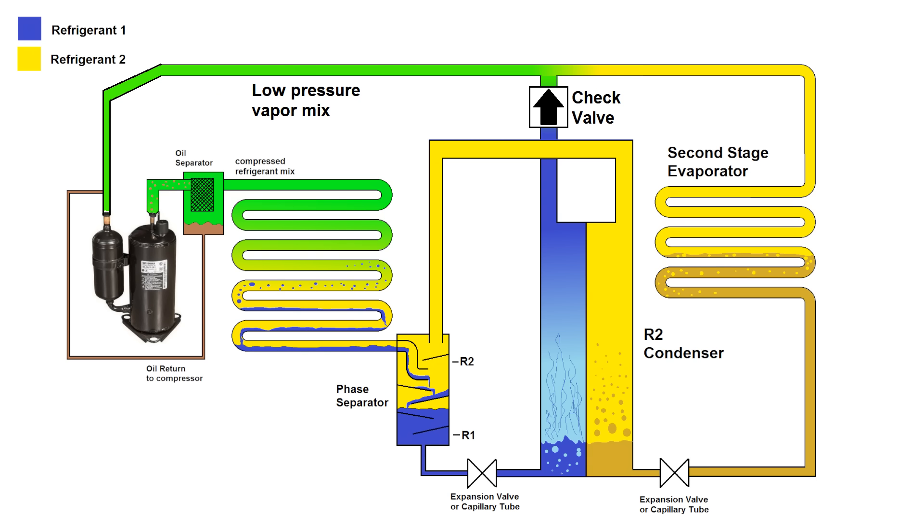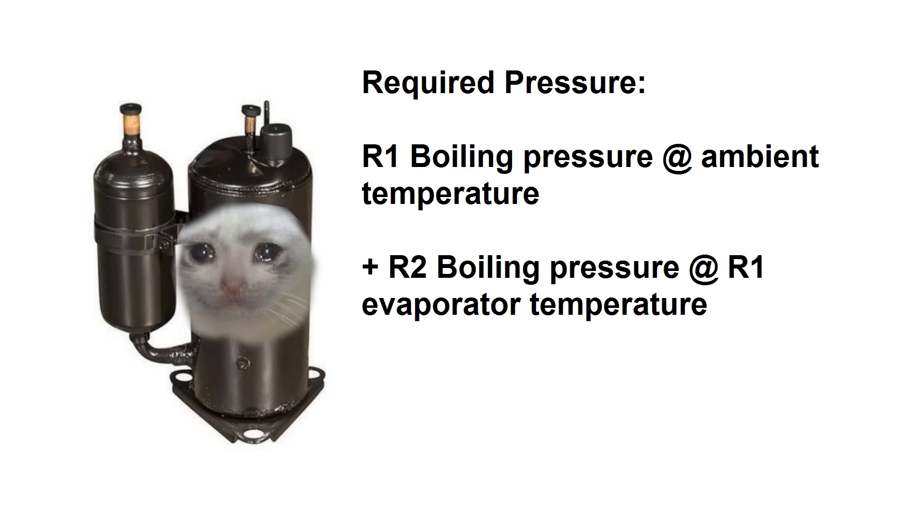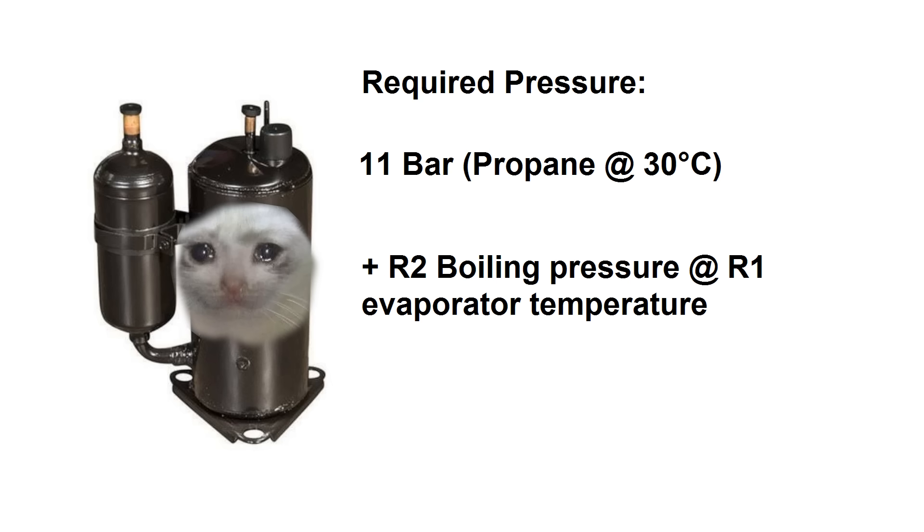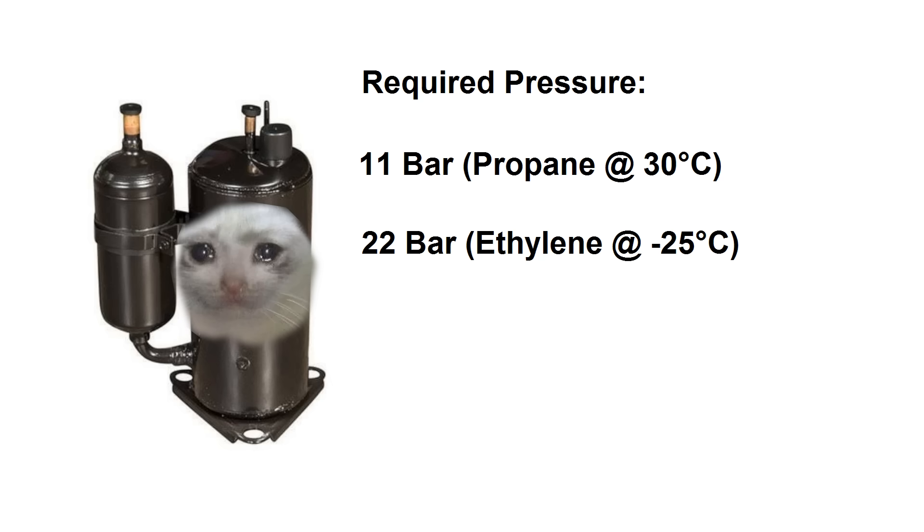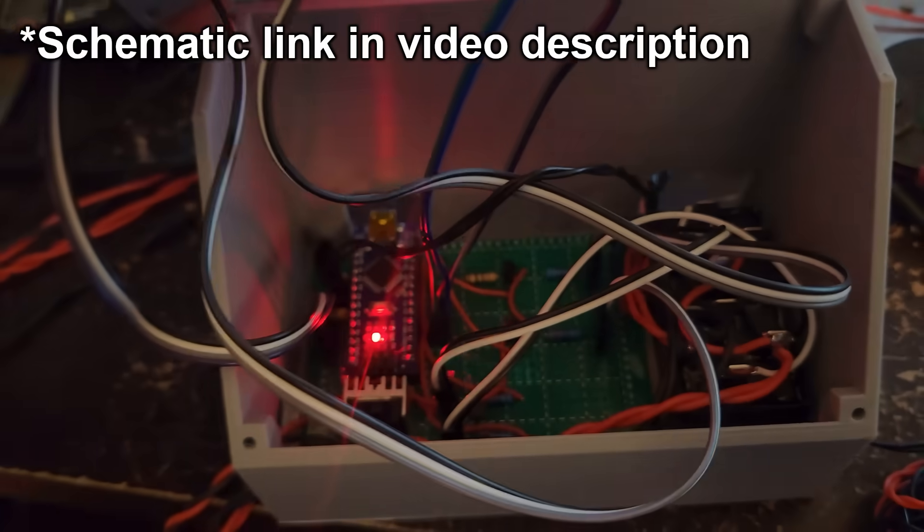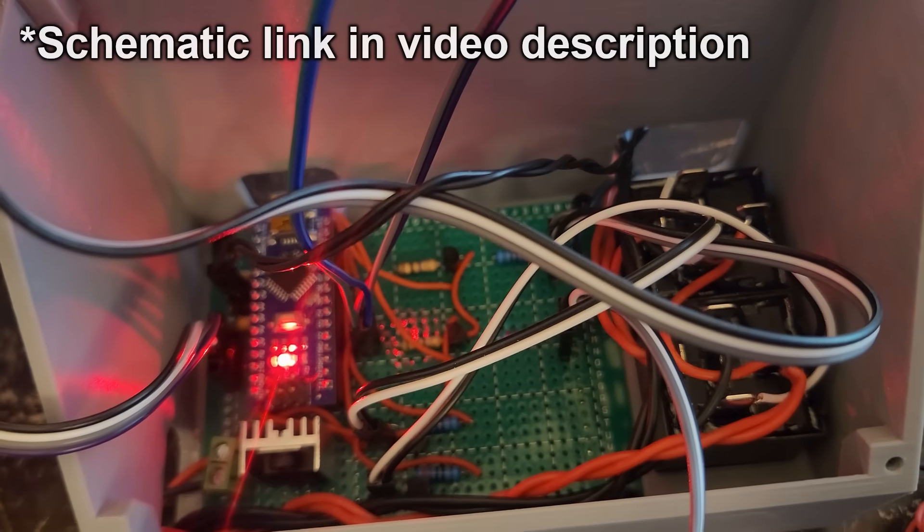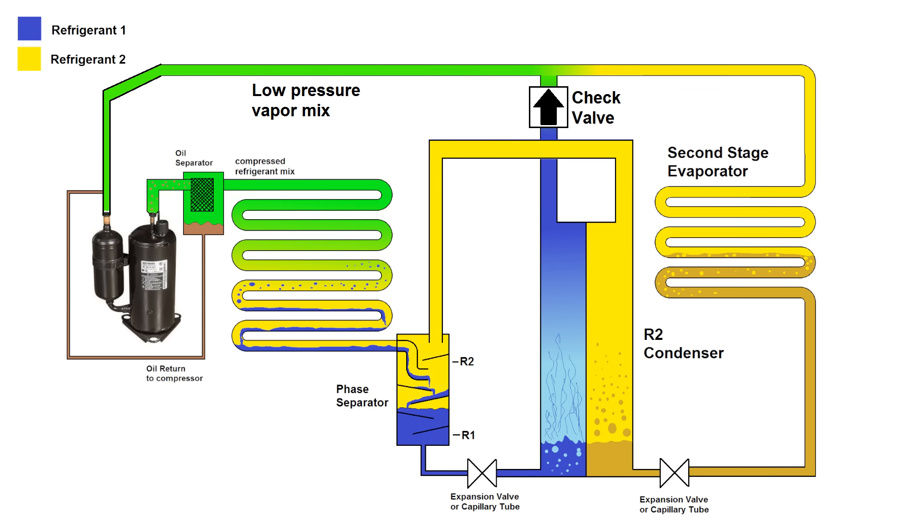Now the obvious catch here is that your compressor needs to work a lot harder than it would in a standard cascade system because it has to generate enough pressure to condense refrigerant one at ambient temperature plus the pressure to condense refrigerant two at the heat exchanger temperature. In my case, that was about 11 bar for propane at 30C plus 22 bar for ethylene at minus 25C, so a total of 33 bar absolute or 460 PSI gauge. So the compressor is very unhappy and I actually had to make a circuit to switch it on and off because running at 100% duty cycle would overheat it. That's the theory, let's actually build it now.